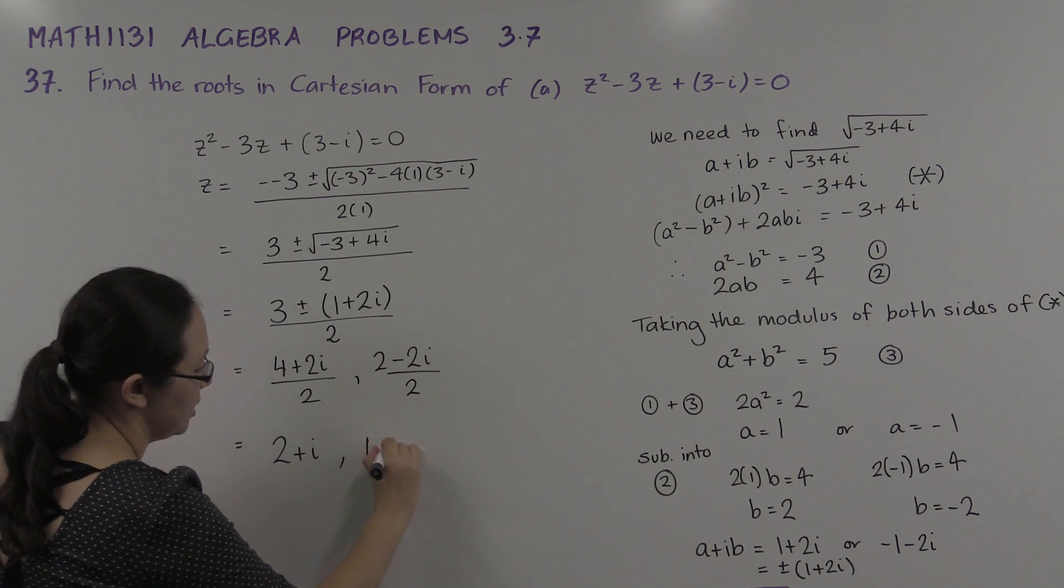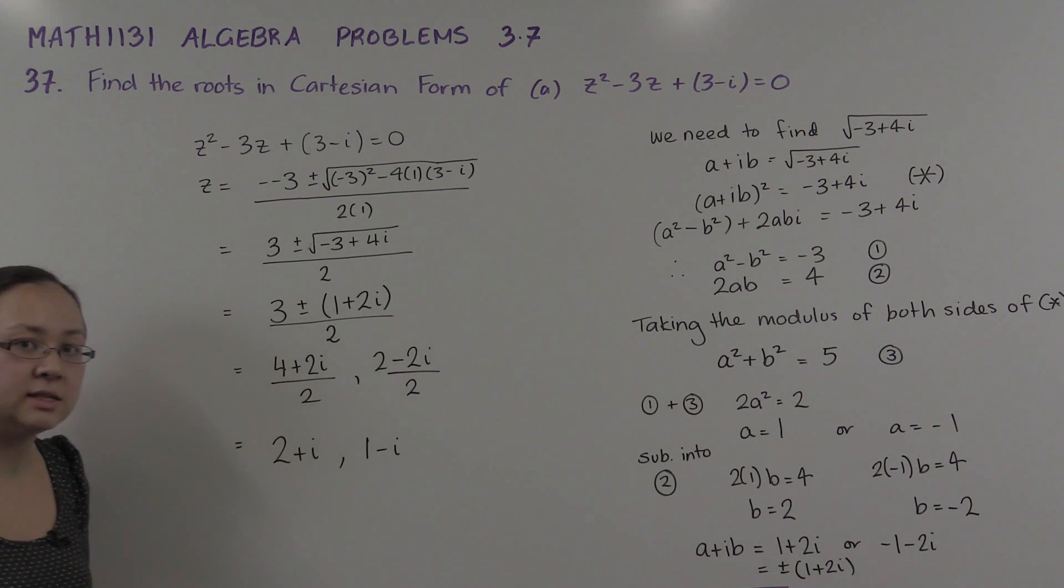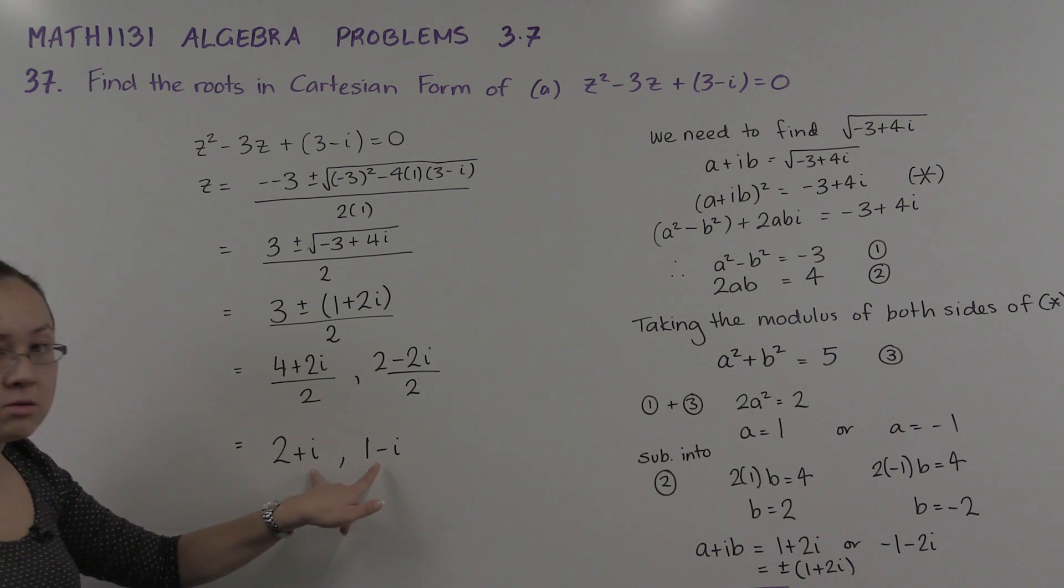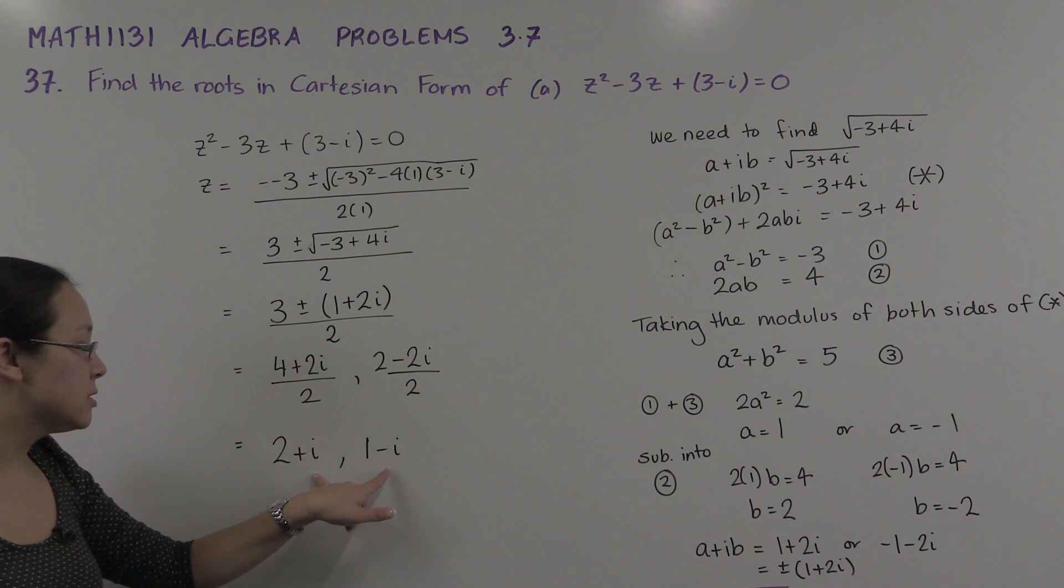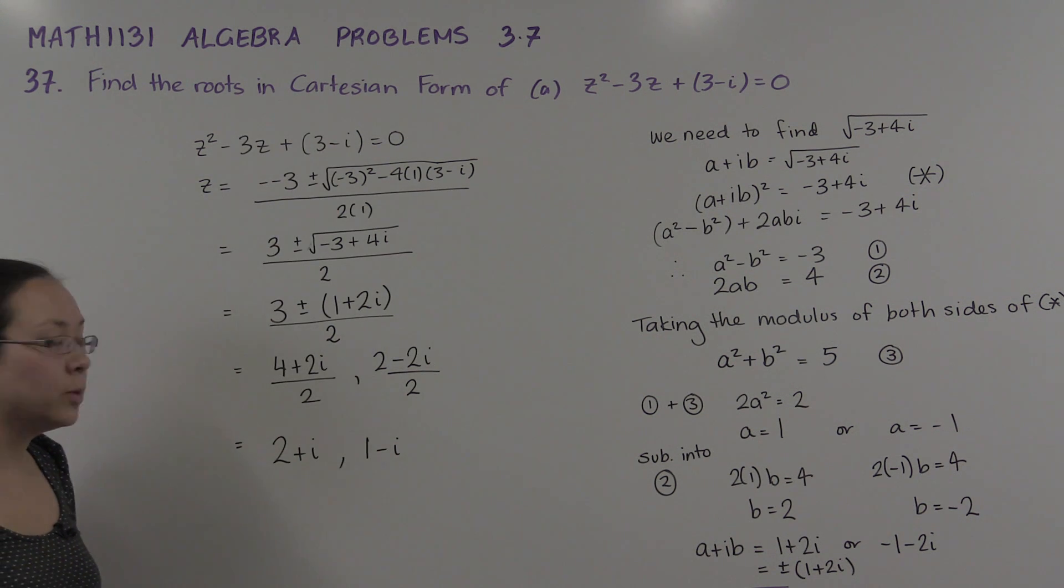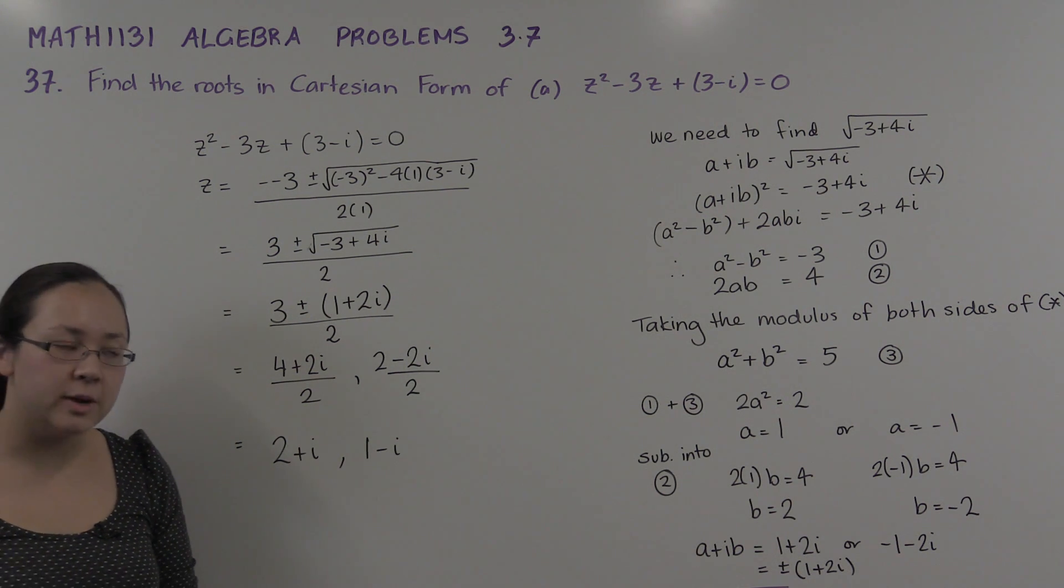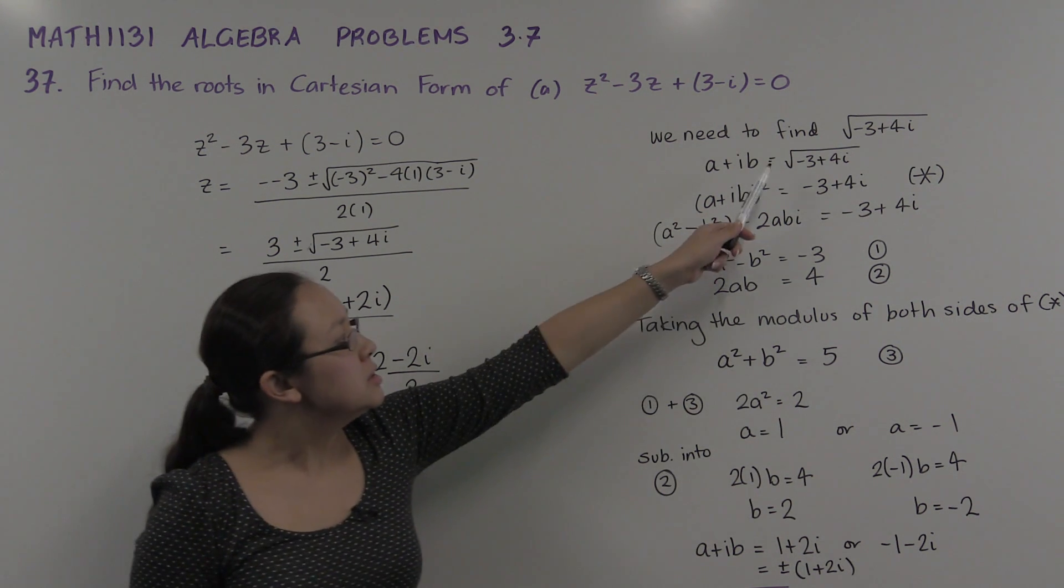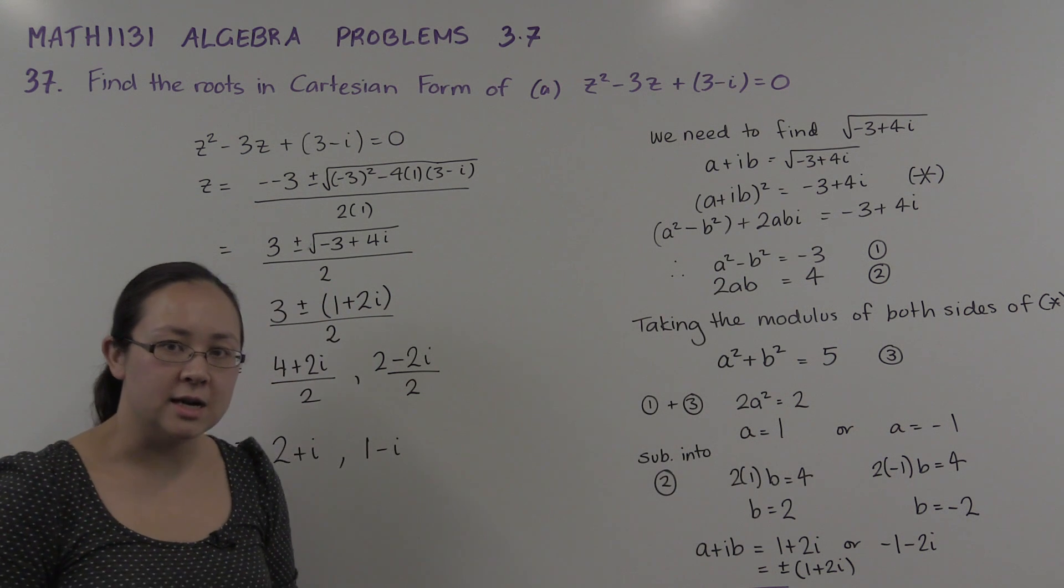Notice that they're not complex conjugate pairs here because these coefficients weren't real. So that's how we solve a quadratic equation and how we find square roots of complex numbers in Cartesian form.